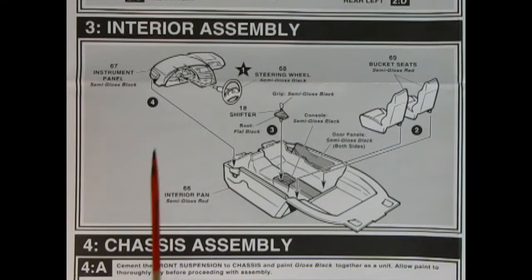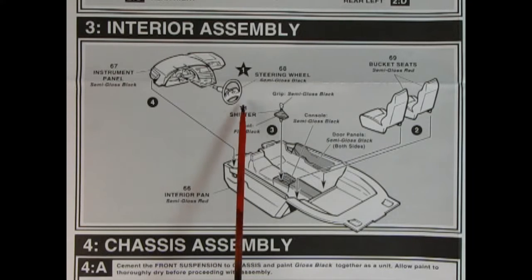Here we've got our interior assembly. We've got our wonderful dashboard, looks like a '96 version. We've got our steering wheel, we also have our grip for our gear shift lever and our bucket seats, which drop into this wonderful interior pan.